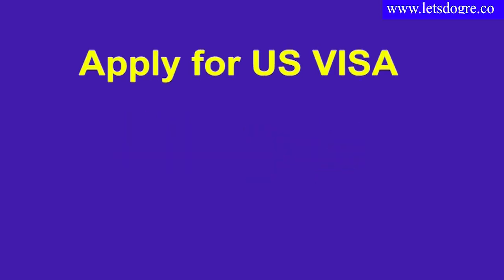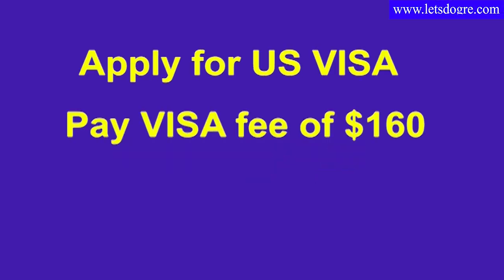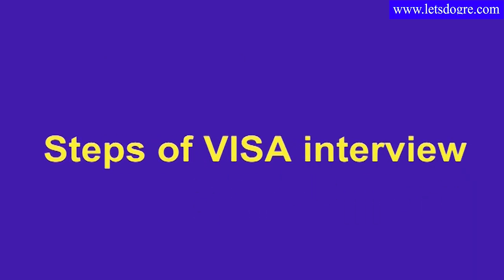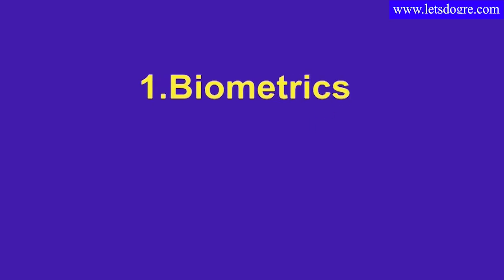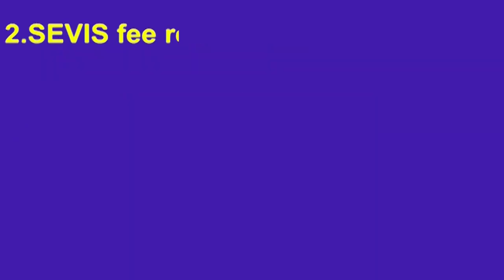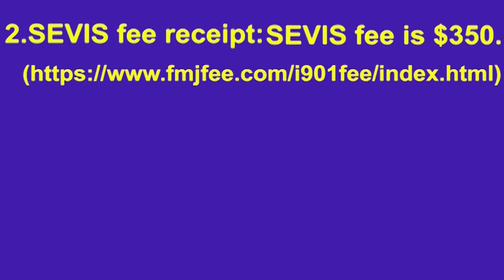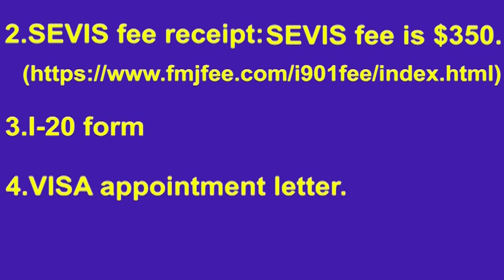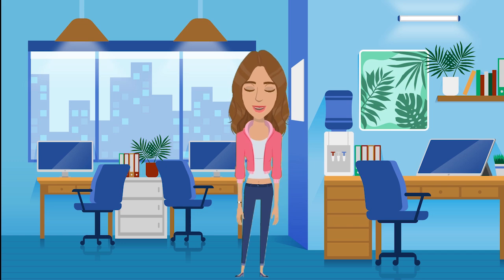Apply for a U.S. visa and pay the visa fee of $160. The steps of the visa interview include biometrics and the visa interview itself. Documents required for the F1 visa interview include: the DS-160 confirmation page, the SEVIS fee receipt (the SEVIS fee is $350, payable via a provided link), the I-20 form, and your visa appointment letter. This is the whole procedure of the F1 visa.